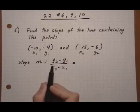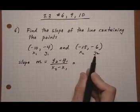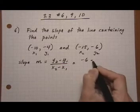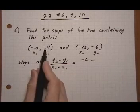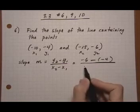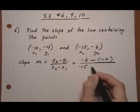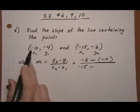So plugging into the slope formula, y2 minus y1, we get y2 minus 6, take away y1 is minus 4, and watch that we get a double negative there, and over x2 minus 15, take away x1 minus 10.